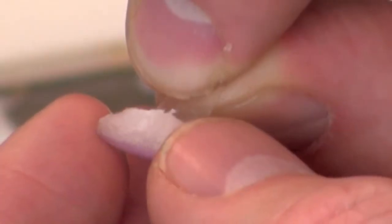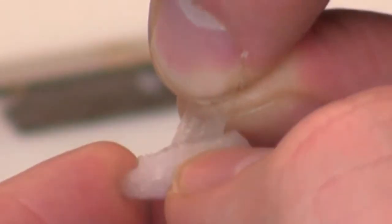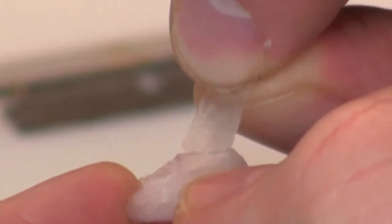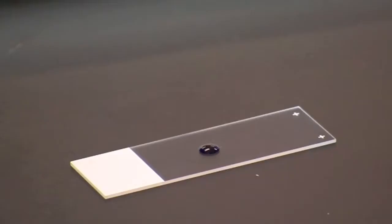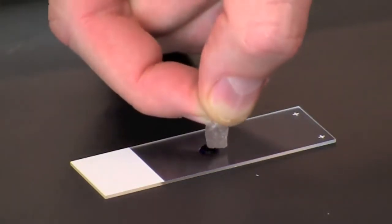Peel a piece off the inside epidermis of the onion leaf scale that is roughly one half to one centimeter squared. Place the piece onto the drop of stain on the slide.